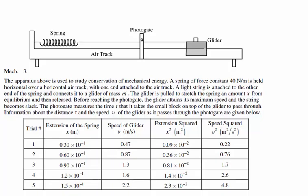The spring has a spring constant of 40 newtons per meter. In the data table, we're given how far the spring is stretched and the speed of the glider as it passes through the photogate. We're also given the distance squared and the speed squared — we'll see why those values are useful in a moment.